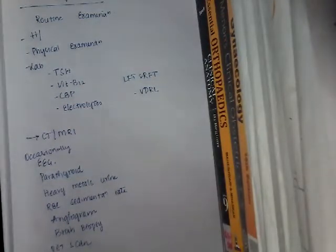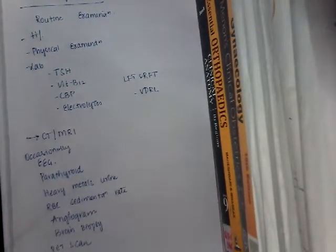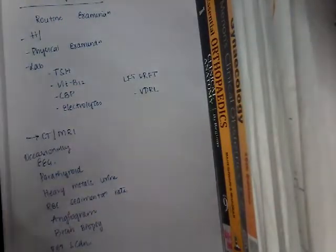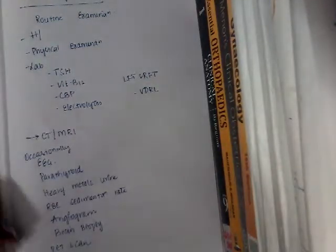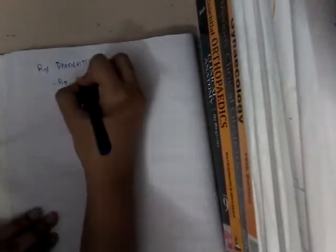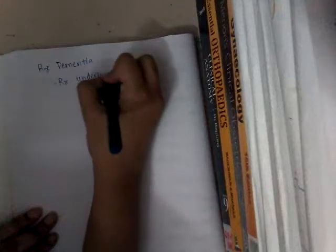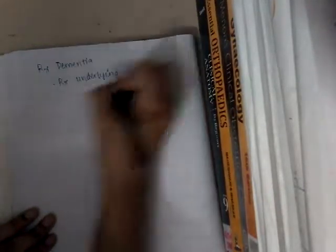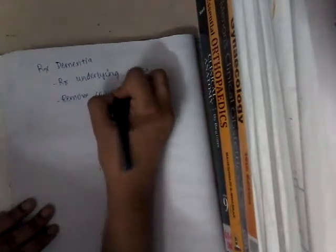Treatment of dementia is mainly symptomatic. You have to first treat the underlying cause — if it is due to infection, vitamin B12 deficiency, or something similar, treat that first. Also remove any cognition-impairing drugs or medications that impair cognitive function.